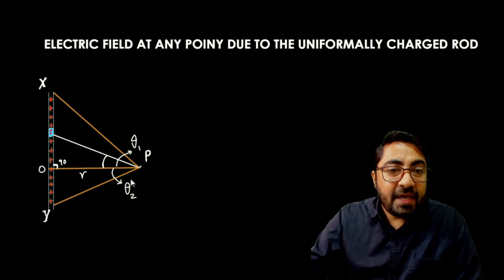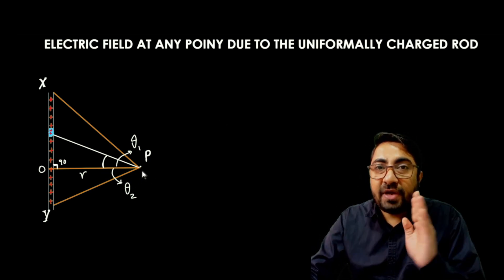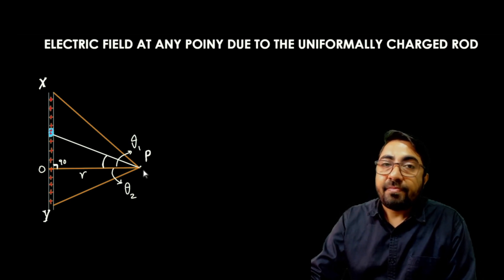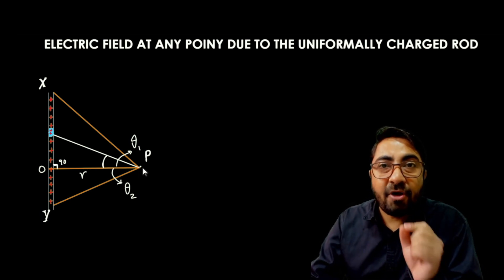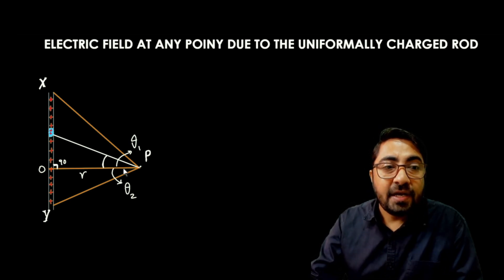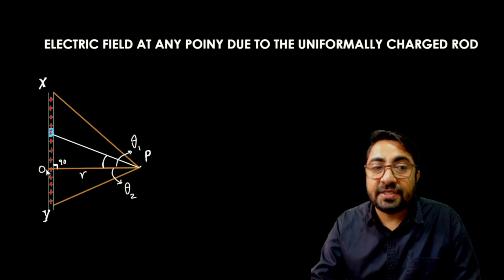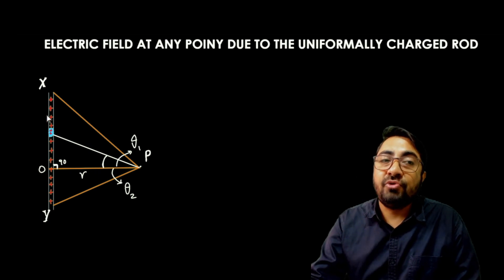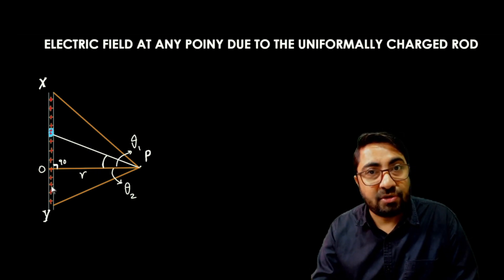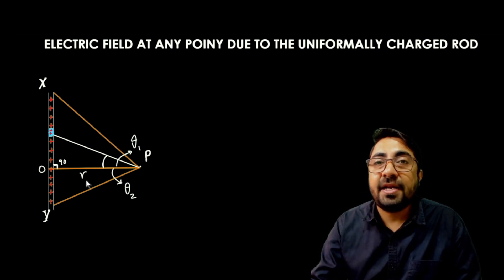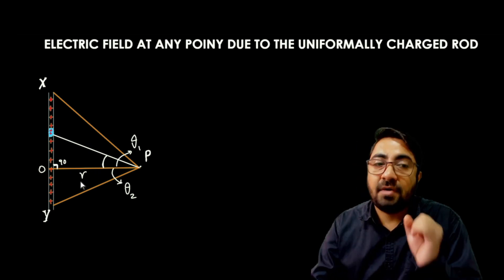At point P, we have to calculate the electric field. This P point is situated at some perpendicular distance from the uniformly charged rod. Let's consider the distances as shown in this picture.